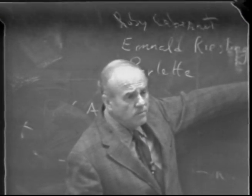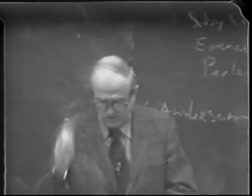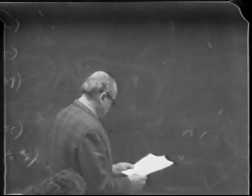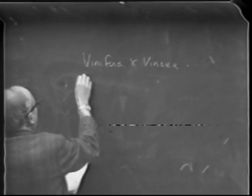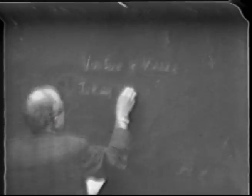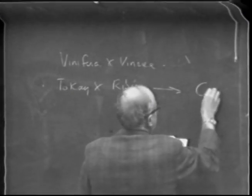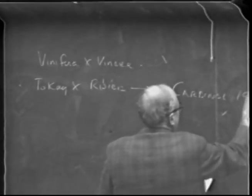You'll hear about a few French hybrids being used in the eastern states, and one or two being used up in Oregon and Washington. Now let me give you a few examples of different types of crosses. The most common would be vinifera times vinifera. A well-known example would be Tokay crossed with Rabier — that gives us Cardinal, done in 1946.